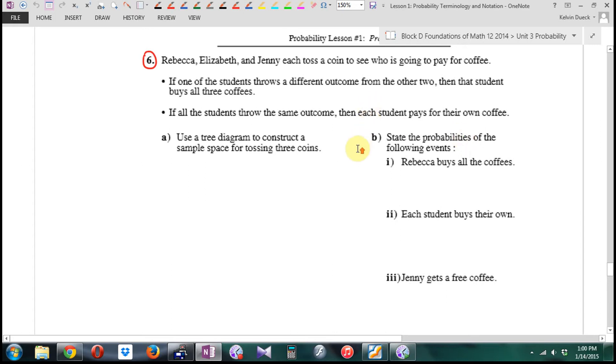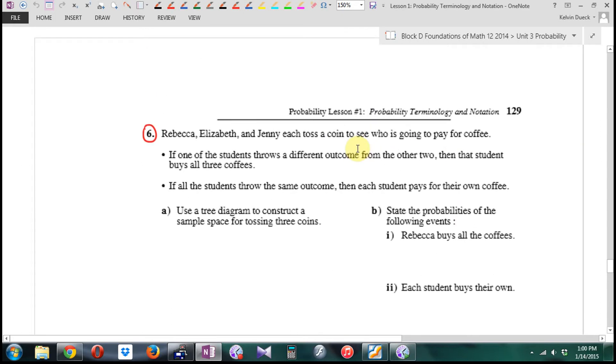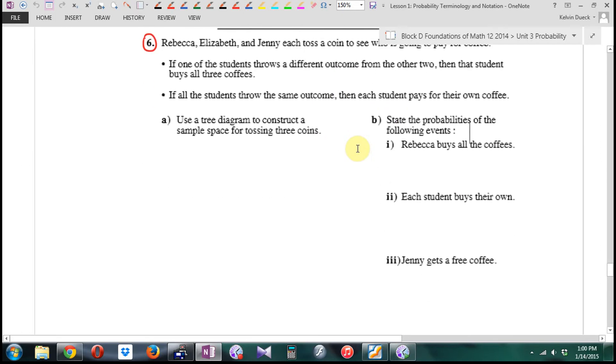So going over the homework, page 129, 6A. I'm going to do a tree. Now there's three people, three coin tosses. Mark, three is about the limit before I try a different approach from a tree.